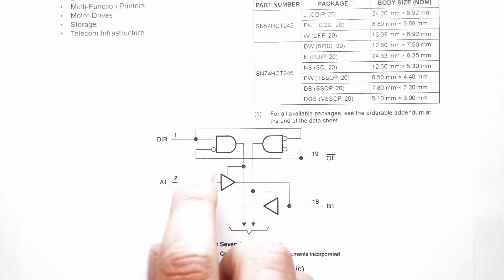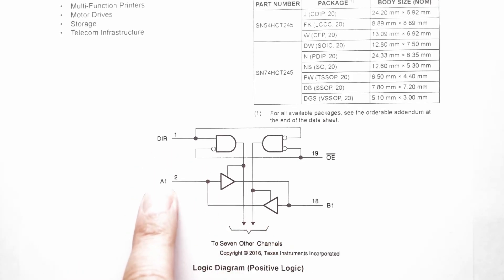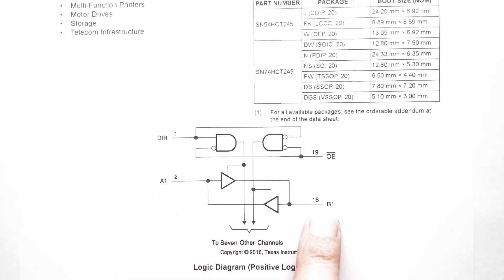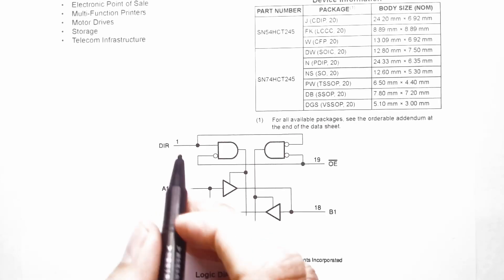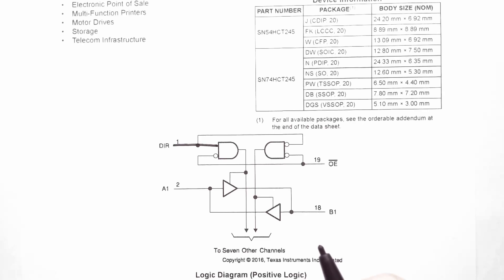Looking at the schematic here we can see there is a direction input. There's also an A terminal and a B terminal. I just want A to always be input and B to always be output. By setting the direction input high, an input to A will pass through to the output at B.